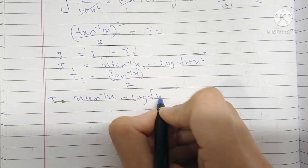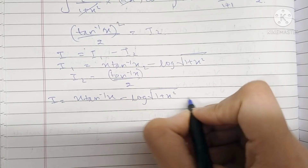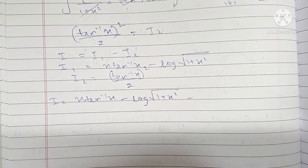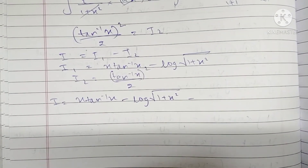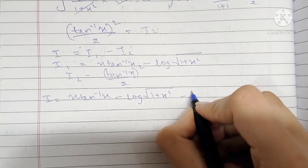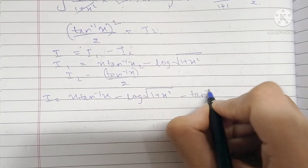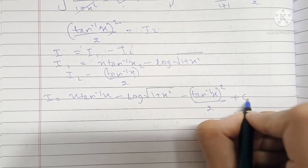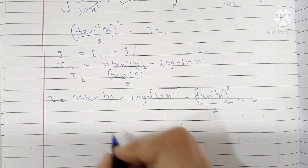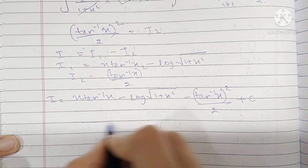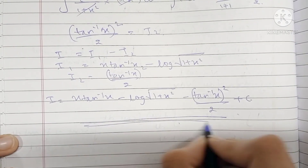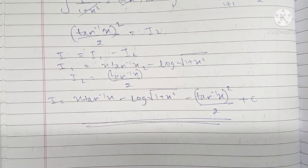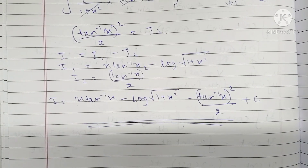So our final integral I becomes x · tan⁻¹(x) − log(√(1 + x²)) − (tan⁻¹(x))²/2 + C. And this is the final answer. That's it for today guys — thank you so much for watching, I'll see you in the next video, bye!